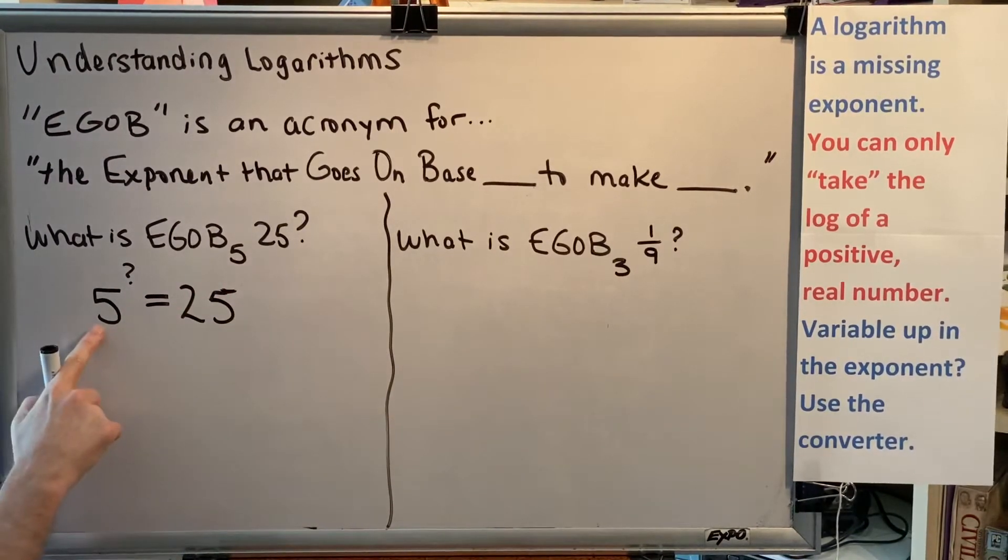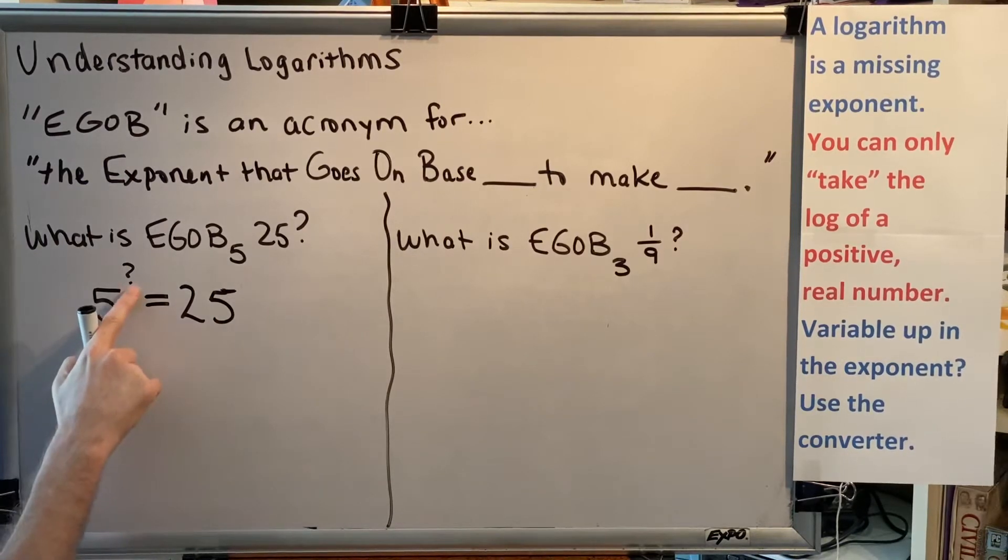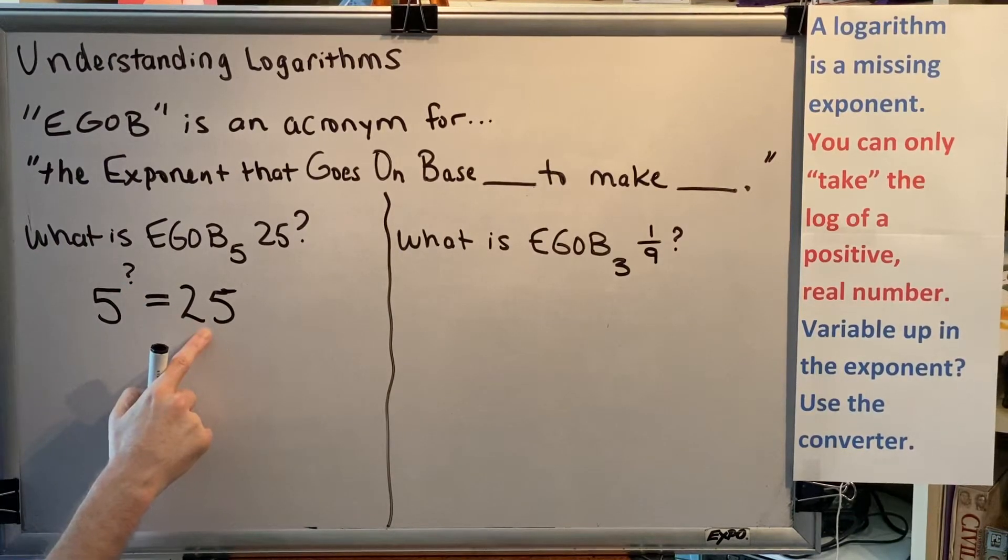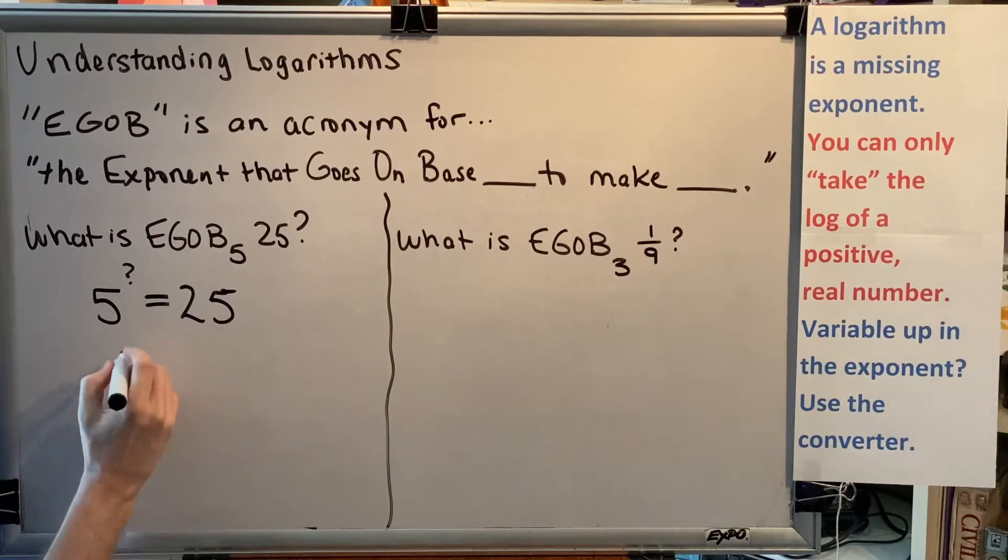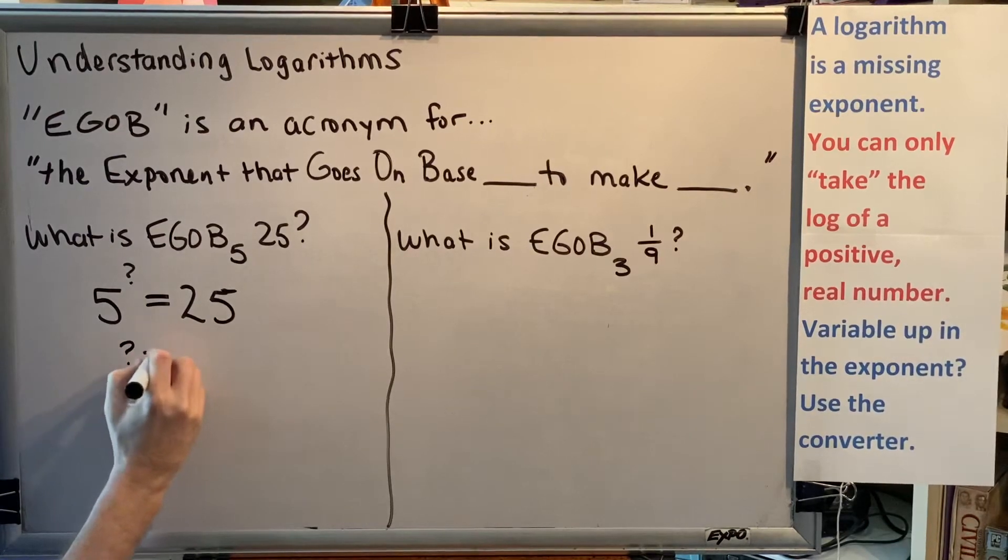We have to multiply 5 by itself how many times to turn it into 25? The answer is 2. The missing exponent is 2.